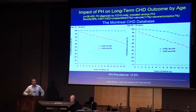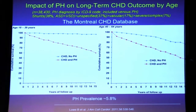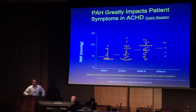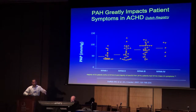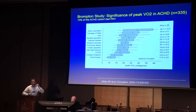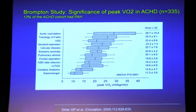A simple slide shows the impact of PAH on long-term outcome by age in congenital heart disease. This study included nearly 40,000 people from the Montreal congenital heart disease database. Pulmonary hypertension certainly impacts cumulative survival. From the Dutch registry, classifying patients by New York Heart Association class shows a clear relationship between NYHA class 1 through 4 and the degree of pulmonary hypertension by mean PA pressure.